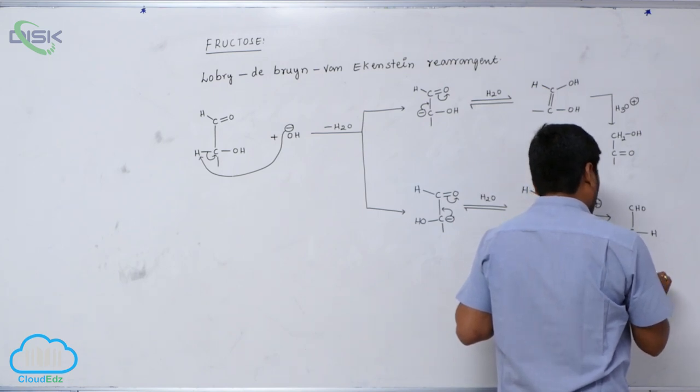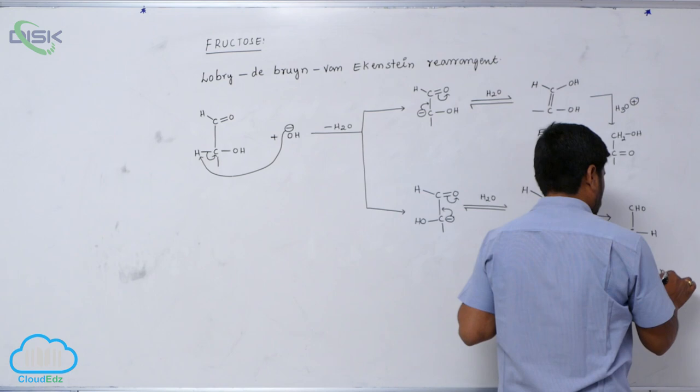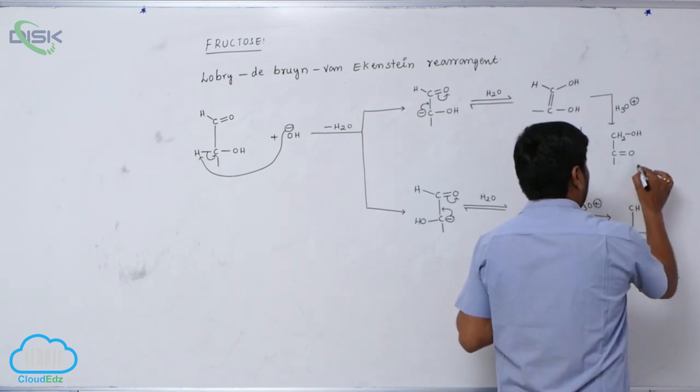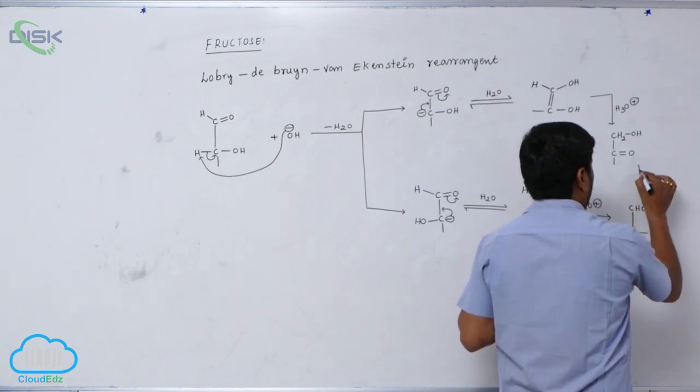One pathway converts the intermediate into D-fructose (keto sugar), while the other converts it into a product with an aldehyde — D-glucose.